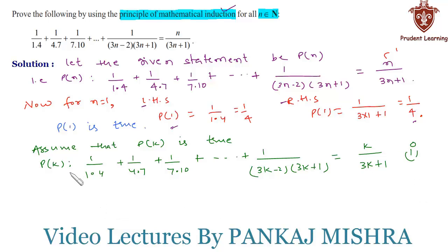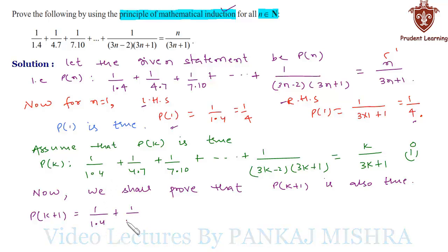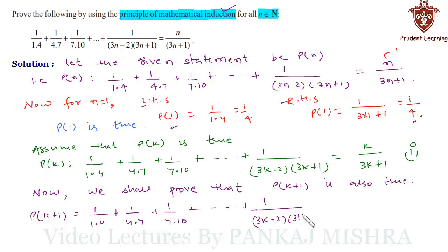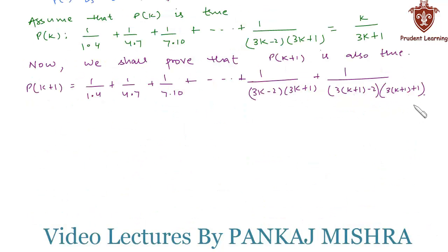In our final step, we shall prove that P(k+1) is also true. P(k+1) consists of the same series: 1/(1×4) + 1/(4×7) + 1/(7×10) + ... up to 1/((3(k+1)−2)(3(k+1)+1)), which simplifies to 1/((3k+1)(3k+4)).